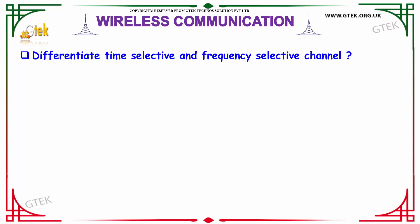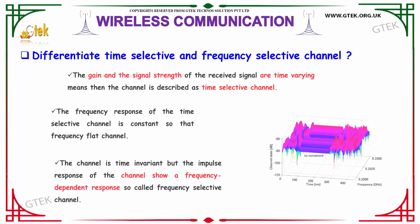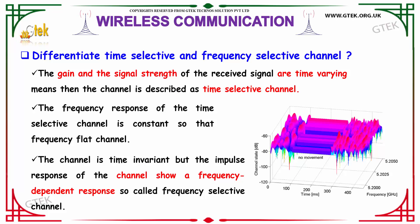Differentiate time selective and frequency selective channel. If the gain and signal strength of the received signal are time varying, then the channel is described as a time selective channel. The frequency response of a time selective channel is constant, giving a frequency flat channel. If the channel is time invariant but the impulse response shows a frequency dependent response, it is called a frequency selective channel.